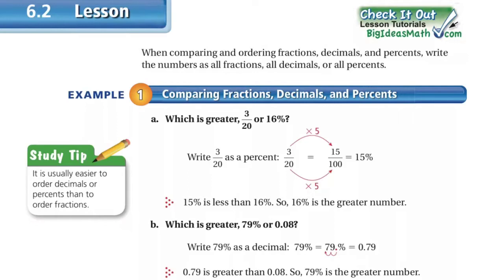When comparing and ordering fractions, decimals, and percents, write the numbers all as fractions, all decimals, or all percents.